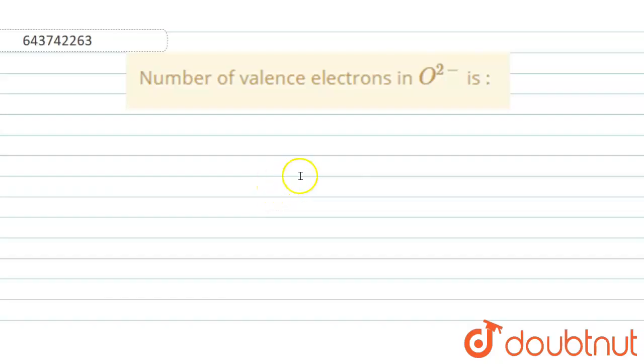Hello everyone, we have this question where we have to write the number of valence electrons present in O2- ion.